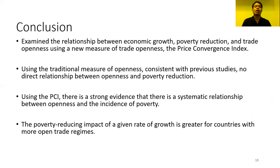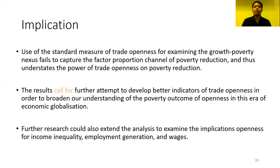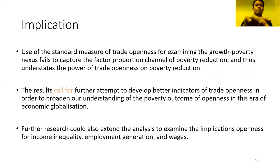In conclusion, using the traditional measure of openness, consistent with previous studies, we found no direct relationship between openness and poverty reduction. However, when using the price convergence index, there is strong evidence of a systematic relationship between trade openness and poverty reduction. This result calls for further attempts to develop better indicators of trade openness, in order to broaden our understanding of the poverty outcomes of trade openness in this era of economic globalization. Thank you very much.